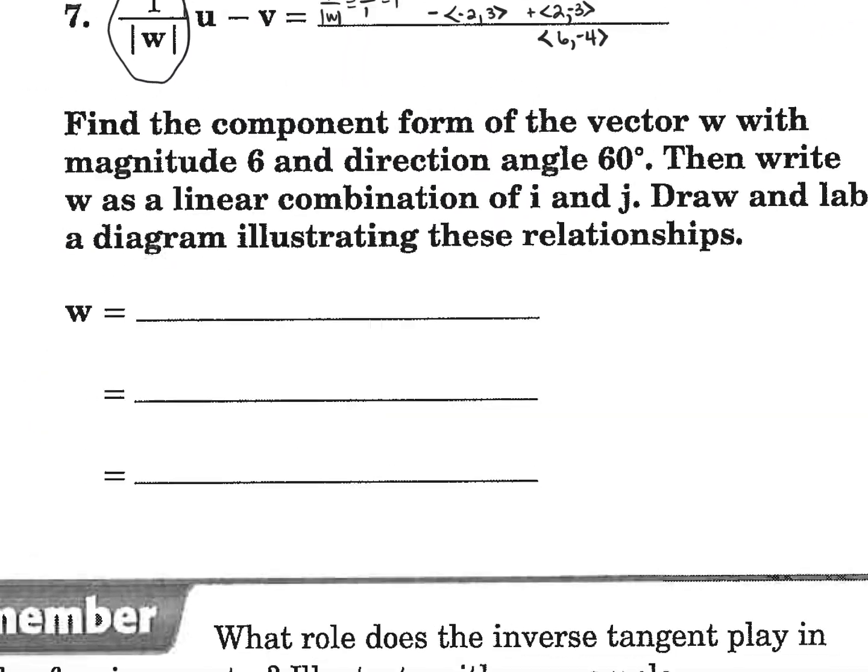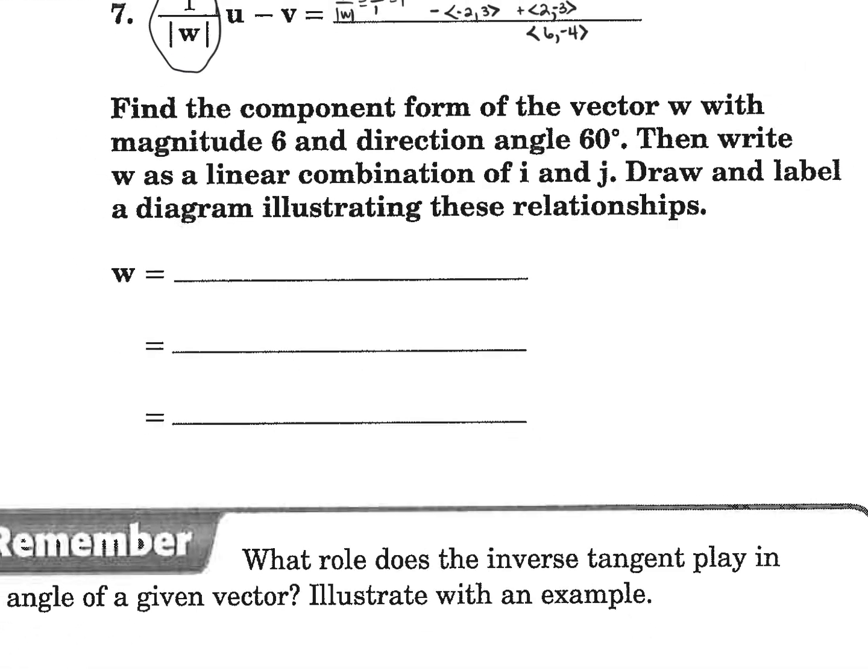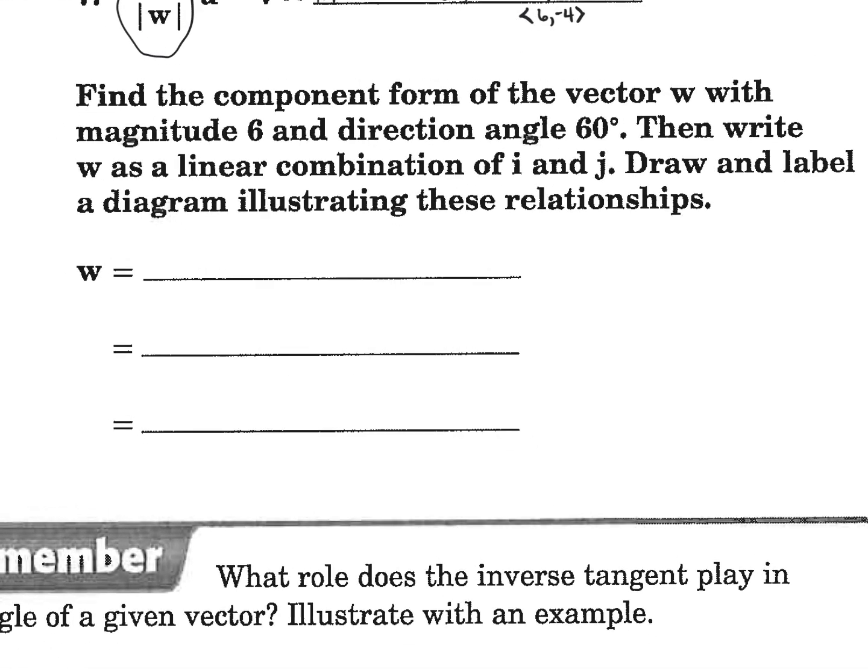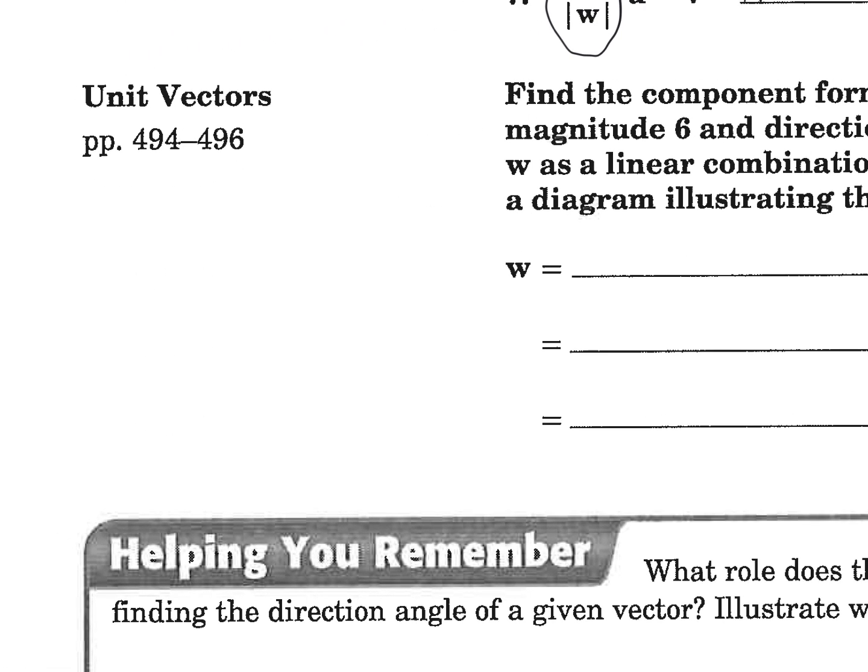Now, last review of what we did last time was how do we find the component form. Do you remember what the component form formulas were? What does X become? What was the formula for X? R cosine θ and Y was R sine θ. And these are both, the only thing we have to make sure of is these are both standard position angles, aren't they?